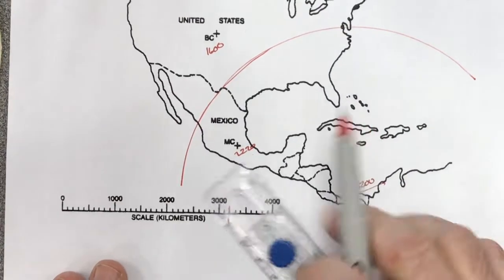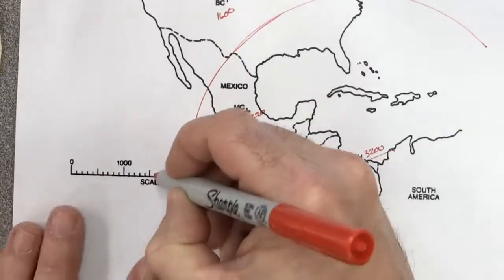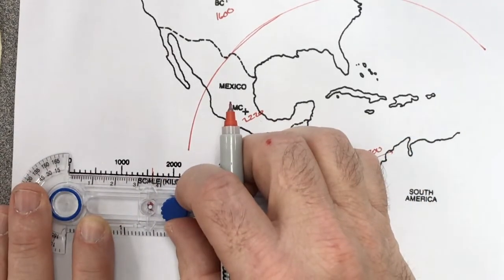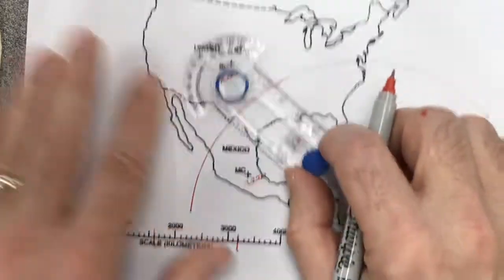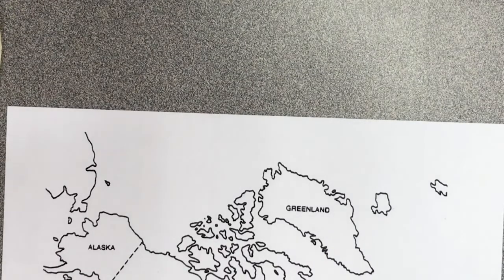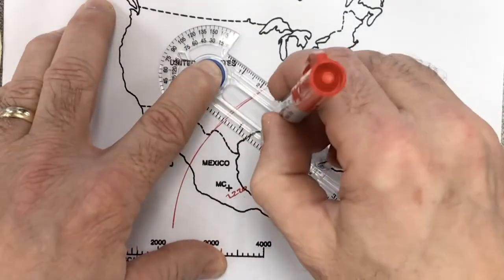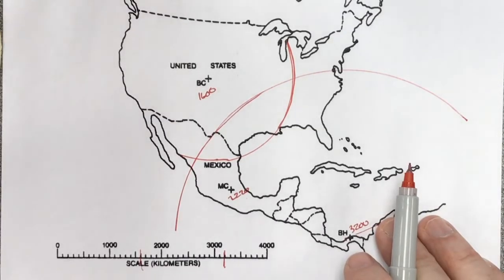So the next one, that was 3,200. Let's do Boulder. Boulder was 1,600. So 1,600 would be here. So I'm going to screw this back to 1,600 right there. Line this up. Again, I've got to put it off screen. And that's 1,600.